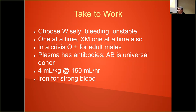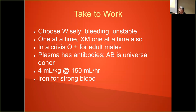Choose wisely summary: Transfuse patients with red cells only if they are bleeding or unstable — not based on an arbitrary hemoglobin number. Transfuse one unit at a time and crossmatch one at a time. In a crisis, use O positive for adult males. For plasma and platelets, AB is the universal donor. About 10 ml per kg will get you up 2.5 grams. For adults, 150–200 ml per hour; for kids, 5 ml per kg per hour. Give IV iron for iron-deficiency anemia.